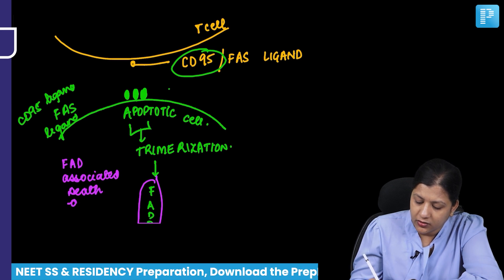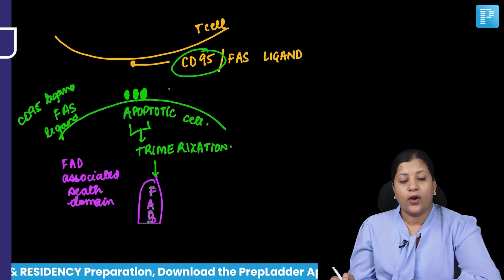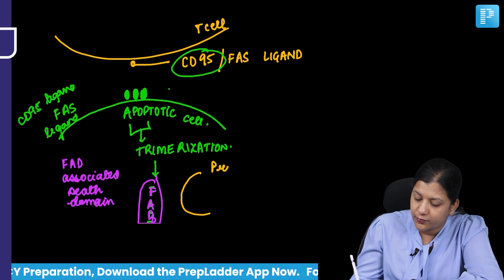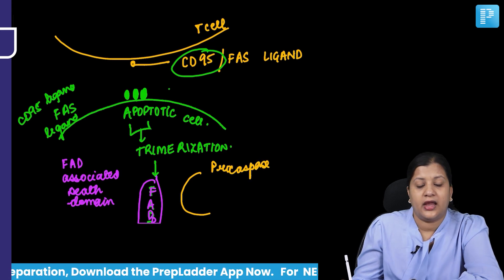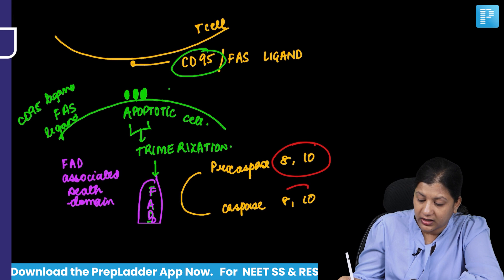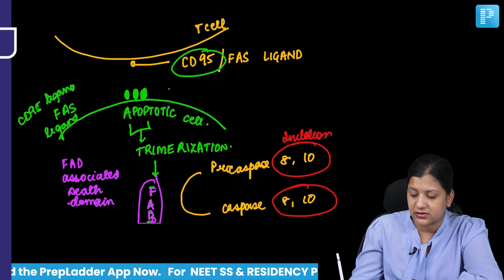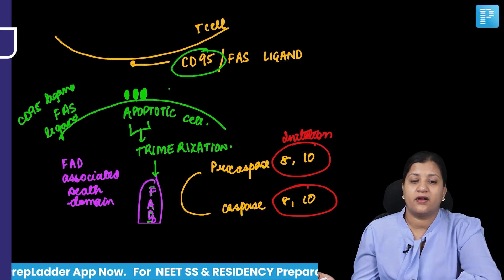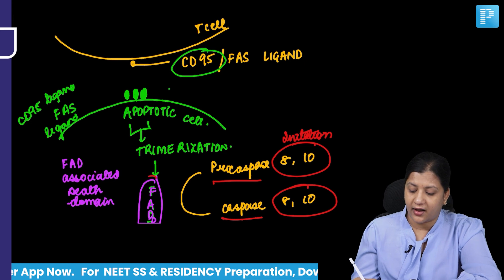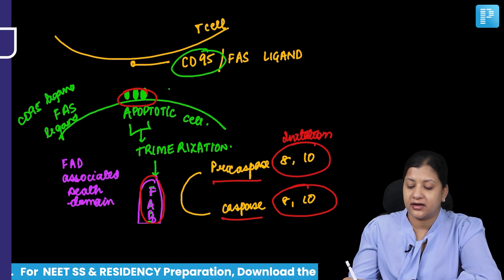What is FADD? It is Fas-associated death domain. FADD — Fas-associated death domain — activates caspase 8 and caspase 10. These are your initiator caspases; we learned that caspases 8, 9, and 10 are initiator caspases. So caspase 8 and 10 get activated from pro-caspase to active caspase, and this is mediated by FADD.